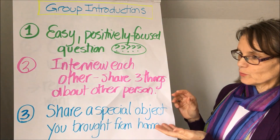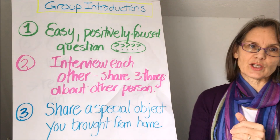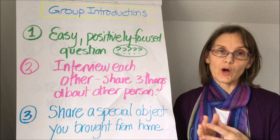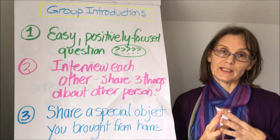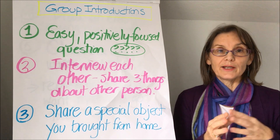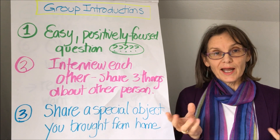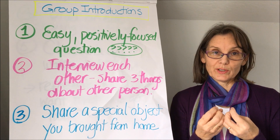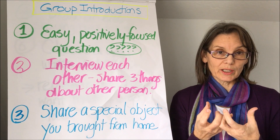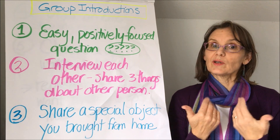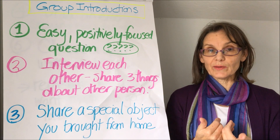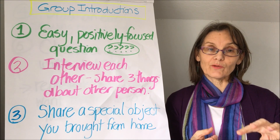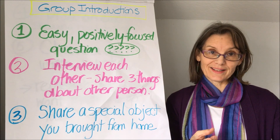The third way is to share a special object that they might bring from their office or their home that is really meaningful to them. You can create a beautiful table display where they share their object, why it's important to them, how it helps them do their work or feel positive about their work, and then they can put that object on the table for the length of the meeting.